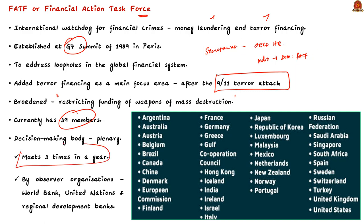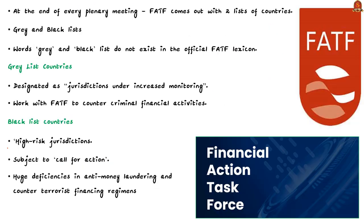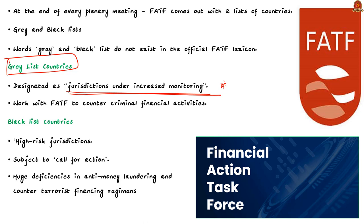Firstly, the grey list — officially termed as 'jurisdiction under increased monitoring.' Countries that are considered safe havens for supporting terror financing and money laundering are put in the FATF grey list. This inclusion serves as a warning to the country that it may enter the blacklist.